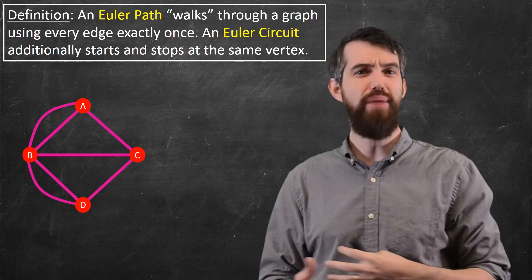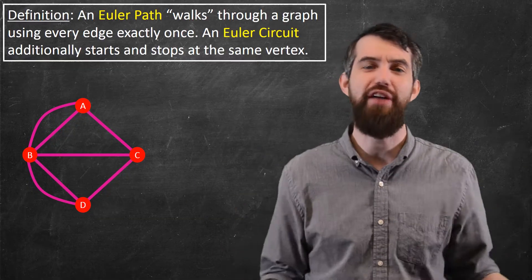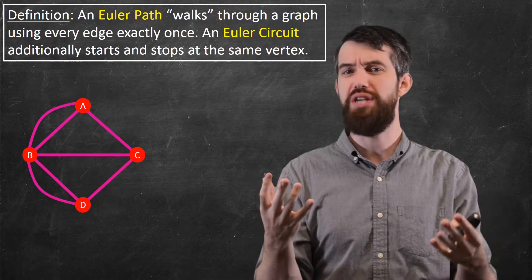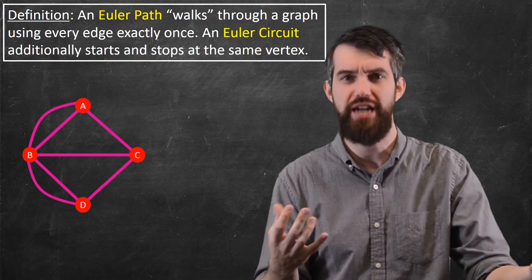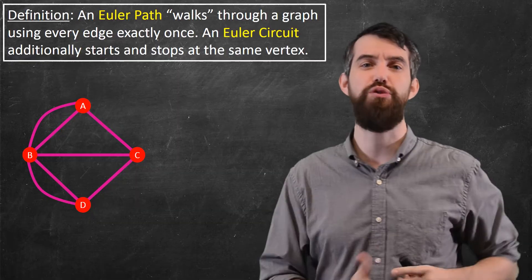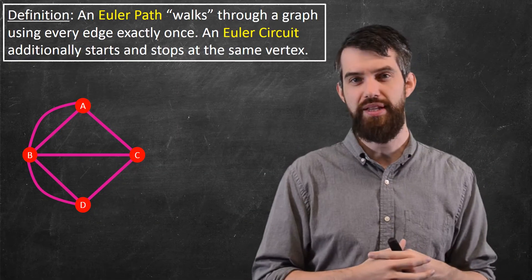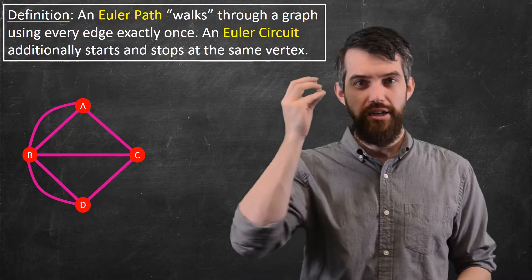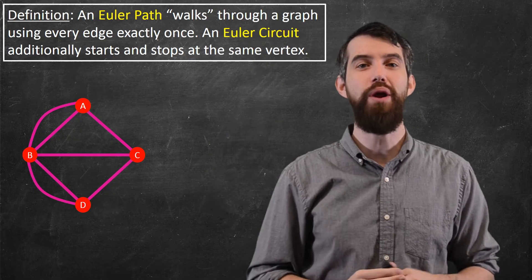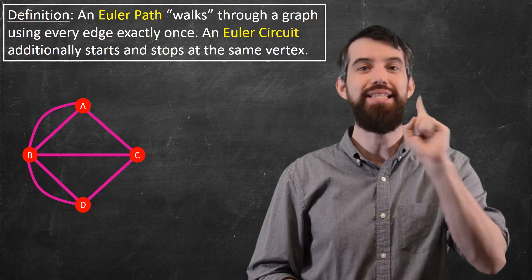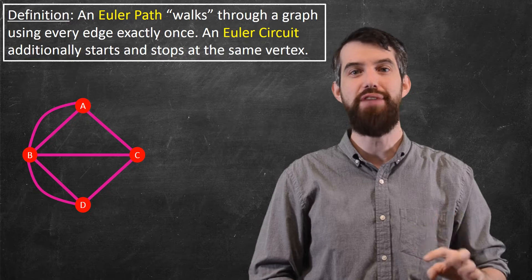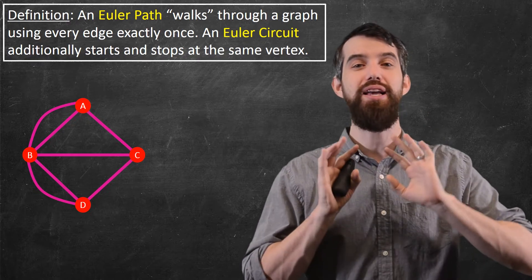Suppose I have some graph, and I want to walk through it. What I mean is I want to start on some particular vertex, go along an edge to a different vertex, and so on. An Euler path is one that starts at a vertex and moves through the graph where every edge is taken exactly one time — not zero, not two times. Every edge in the entire graph is used exactly once. That is an Euler path.